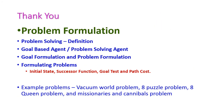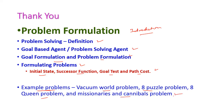Up to this we have seen the problem formulation introduction, covering the definition, goal based agent and problem solving agent, goal formulation and problem formulation, and the four components: initial state, successor function, goal test, and path cost. In the next class we are going to see example problems — the vacuum world problem, 8 puzzle problem, 8 queens problem, and the missionaries and cannibals problem. If you have any doubts, please comment. Thank you.